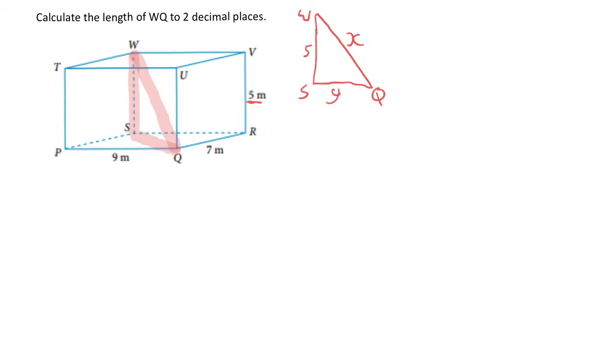So now, before I can go ahead and calculate my unknown X value, I need to be able to calculate my unknown Y value. Going back to the rectangular prism, I can form another triangle, another right angle triangle involving SQ down the bottom. So off to the side again, I'm going to draw that triangle.